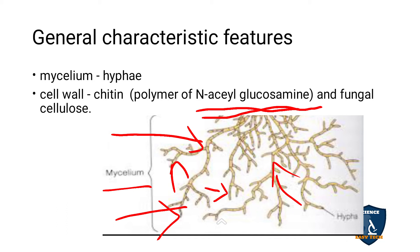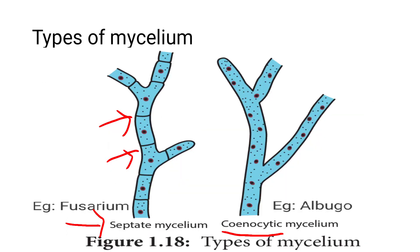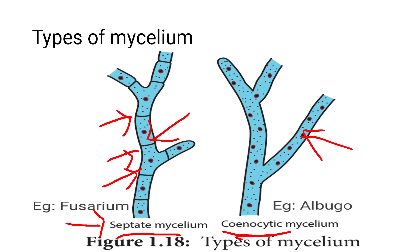The cell wall of fungi is made up of chitin — N-acetylglucosamine polymer — plus fungal cellulose. There are two types of mycelium: septate and cenocytic. In septate mycelium, cross walls are present and each cell has one nucleus — example: Fusarium. In cenocytic mycelium, there are no cross walls and the nucleus is distributed freely — example: Albugo.